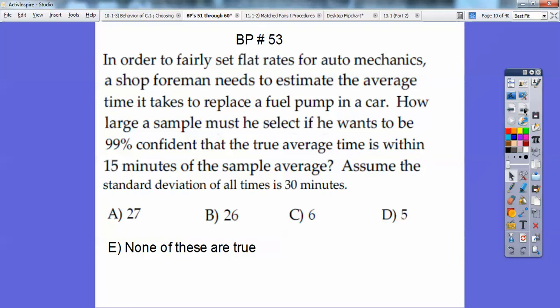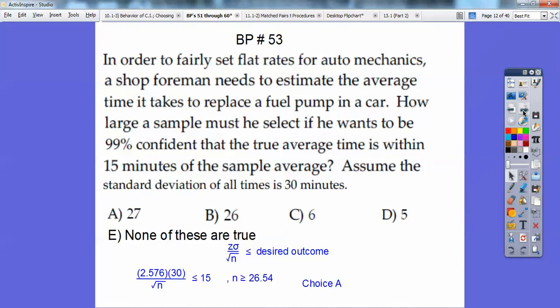All right, in order to fairly set flat rates for auto mechanics, a shop foreman needs to estimate the average time it takes to replace a fuel pump in a car. How large a sample must he select if he wants to be 99% confidence that the true average time is within 15 minutes of the sample average? Assume that the standard deviation of all times is 30 minutes. Since they gave me the standard deviation, we're going to go ahead and use this formula right here, your Z star, so for 99% times your standard deviation divided by the square root of n. We're looking for n, and it's going to be less than or equal to our desired outcome. So in this case, our desired outcome is less than or equal to 15 minutes.